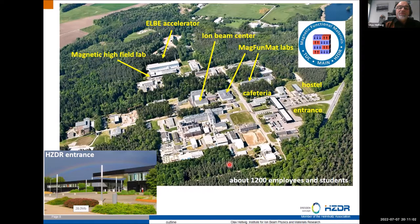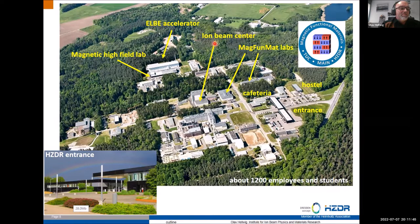The Helmholtz-Zentrum Dresden-Rossendorf is a large research center with 1,200 employees and PhD students. It has three large-scale user facilities: a particle accelerator for material characterization and modification using various radiation types; a magnetic high-field lab where samples can be exposed to pulsed magnetic fields up to 60 or even 100 Tesla; and an ion beam center for irradiating and modifying materials with different ions. My magnetic functional materials group has labs in two buildings there.